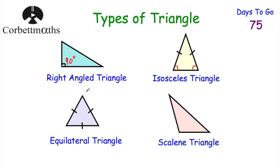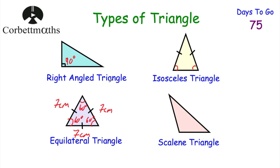This is an equilateral triangle. In an equilateral triangle, all three sides have the same length — for instance, all three sides could be 7 centimetres. It's also important to remember that all angles in an equilateral triangle are the same size: 180 divided by 3 gives 60 degrees, so all three angles are 60 degrees. An equilateral triangle has three lines of symmetry.